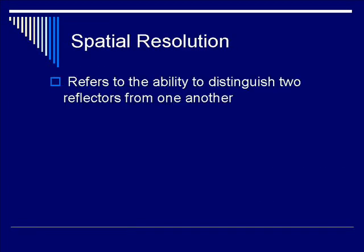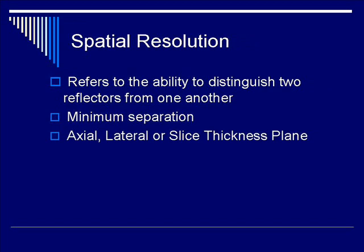Let's talk about spatial resolution. Spatial resolution refers to the ability to distinguish two reflectors from one another. It talks about the minimum separation that you can detect, and there are three categories: axial, lateral, or slice thickness plane. Let's talk about each one in series.